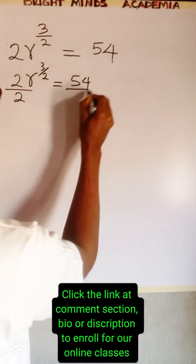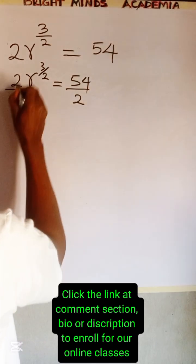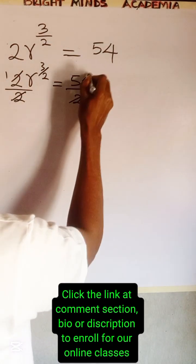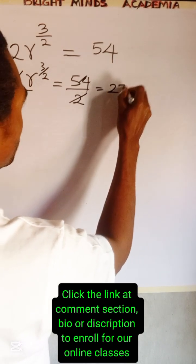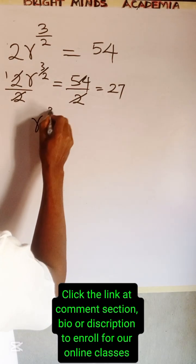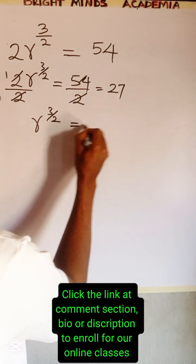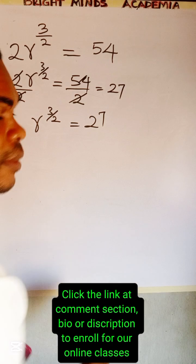Dividing both sides by 2, 2 can go here to be 1, 2 can go here to be 27. So we are left with r to the power of 3/2 is equal to 27.